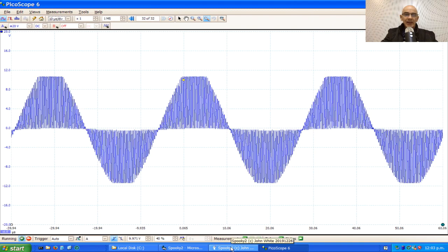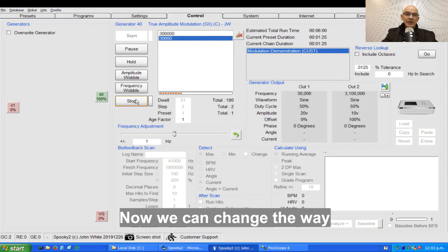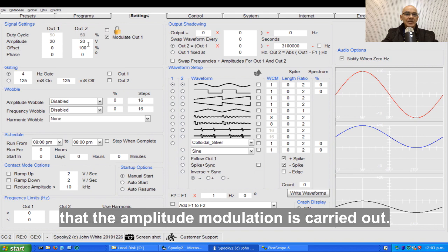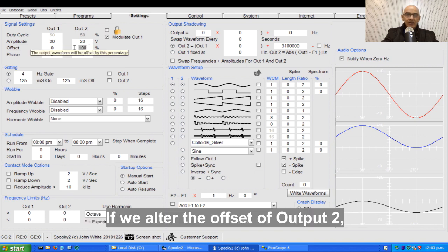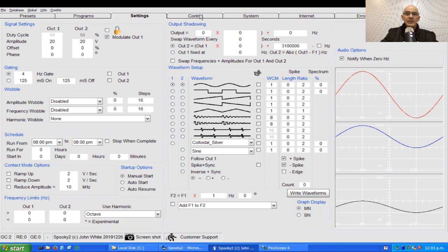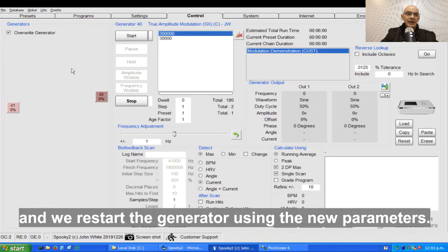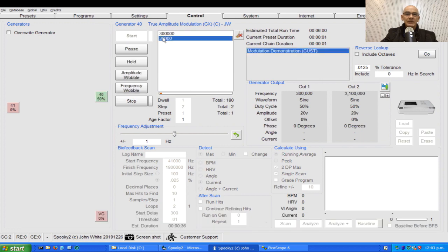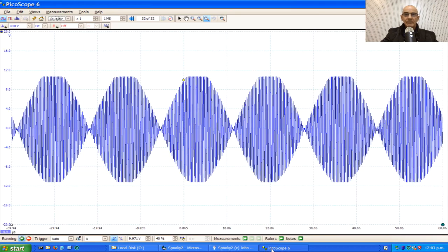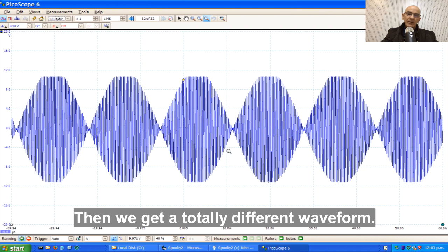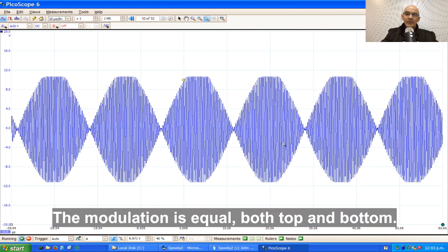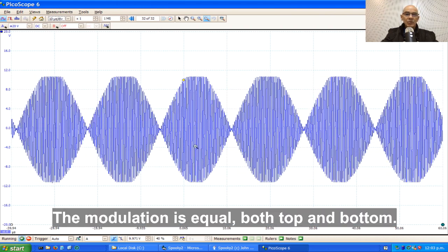So there we have it. Now we can change the way that the amplitude modulation is carried out. If we alter the offset of output number 2 and we restart the generator using the new parameters, then we get a totally different waveform. The modulation is equal both top and bottom.